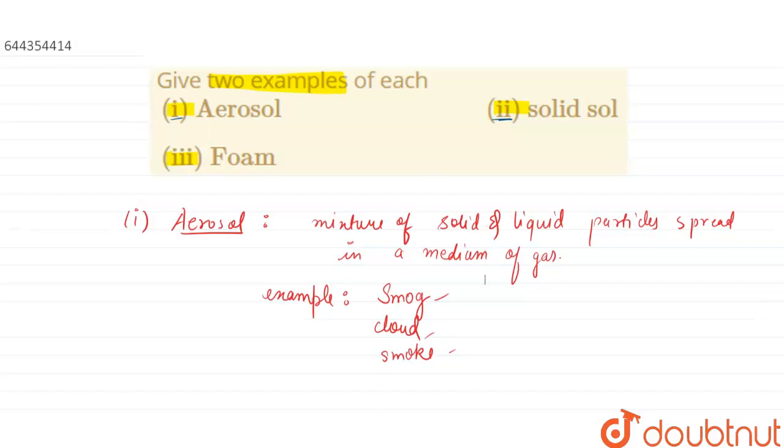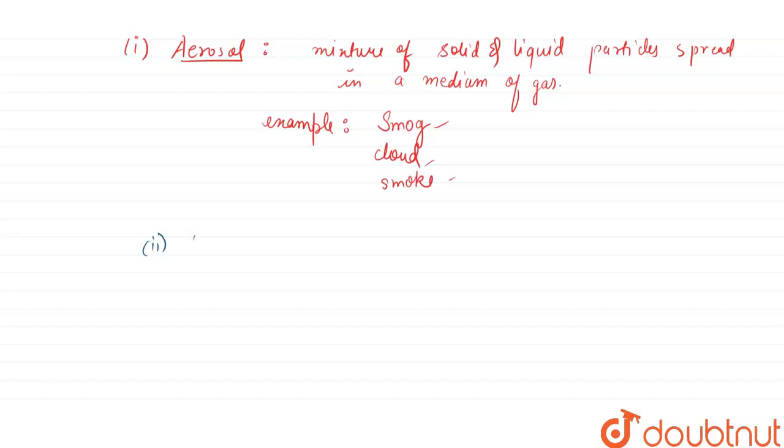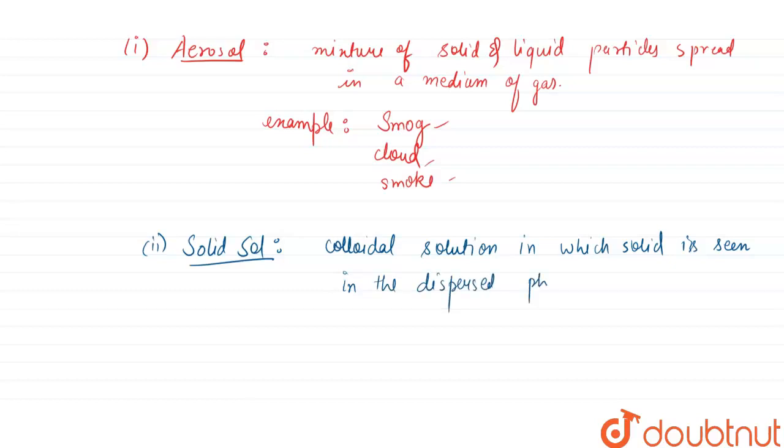Solid sol is a colloidal solution in which solid is seen in the dispersed phase and liquid in the dispersing medium. Examples of sol are ink,